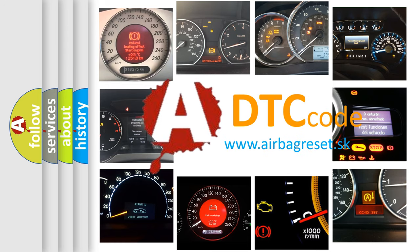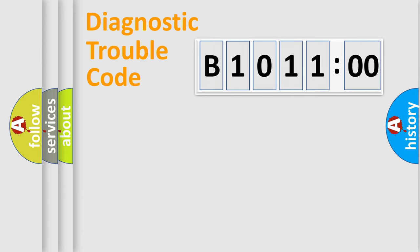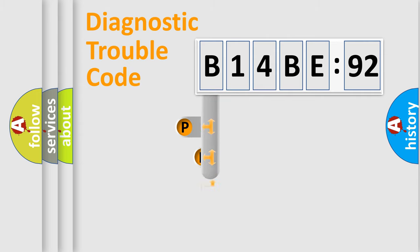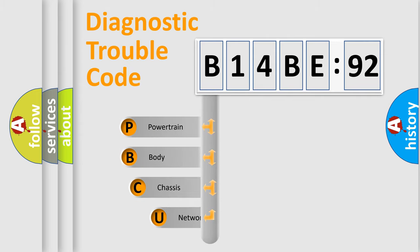We divide the electric system of automobile into four basic units: Powertrain, Body, Chassis, and Network. This distribution is defined in the first character code.